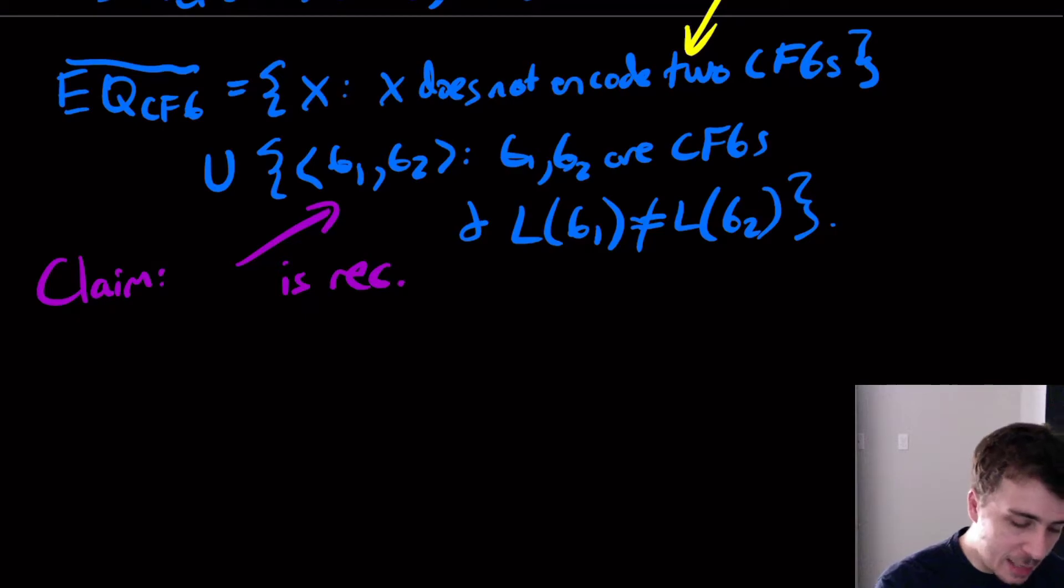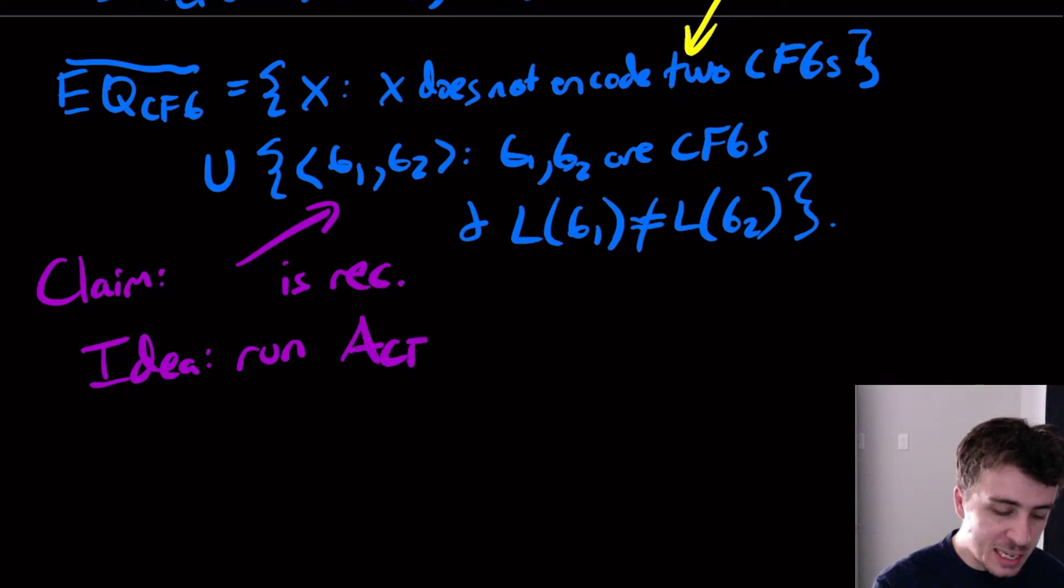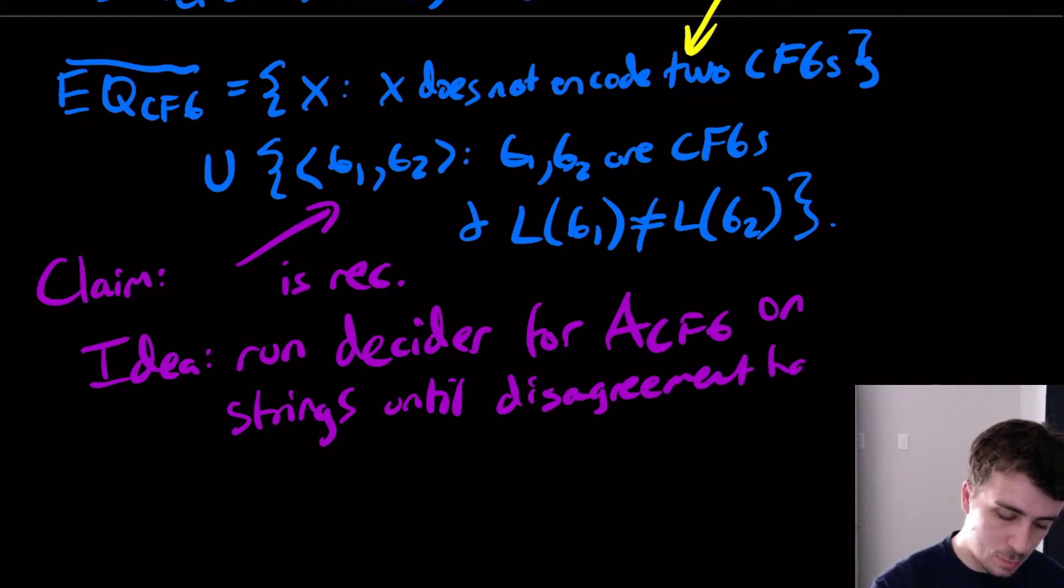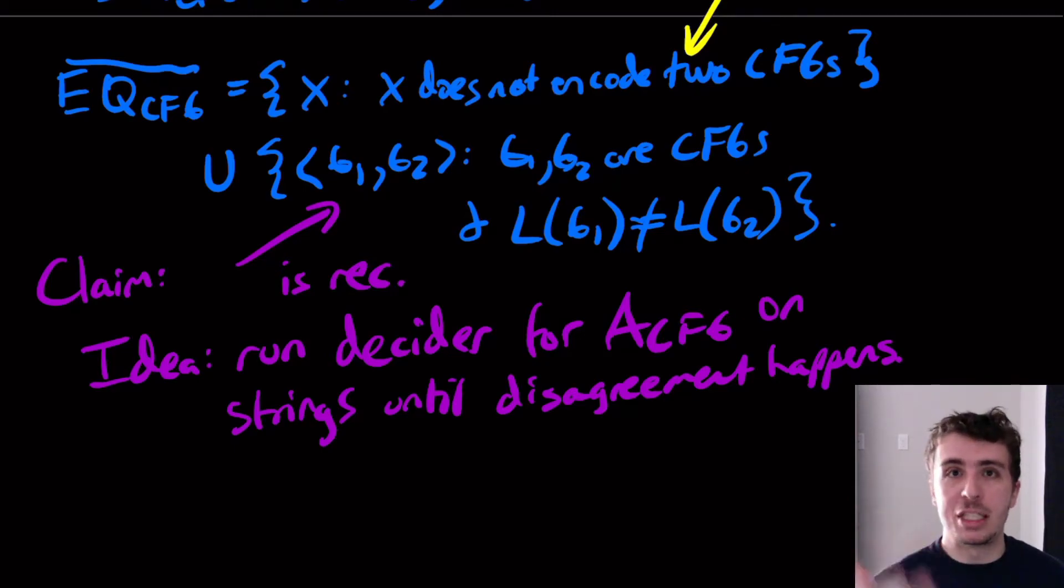So the idea here is run the decider for A_CFG on strings until disagreement happens. We'll just keep going. We'll test more and more strings until eventually one grammar says yes and the other one says no.